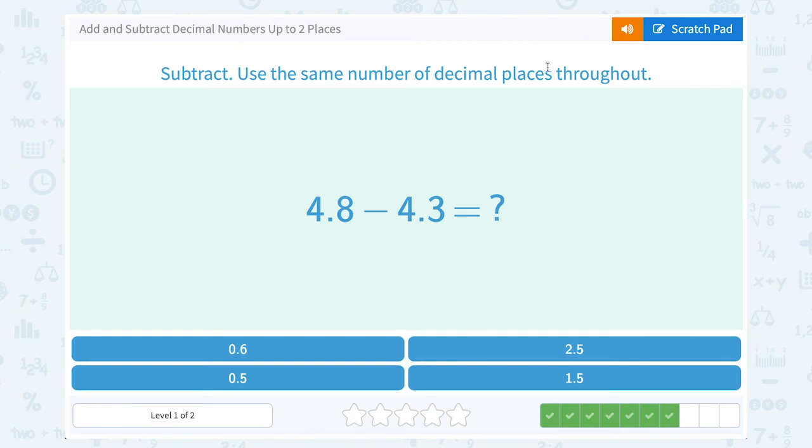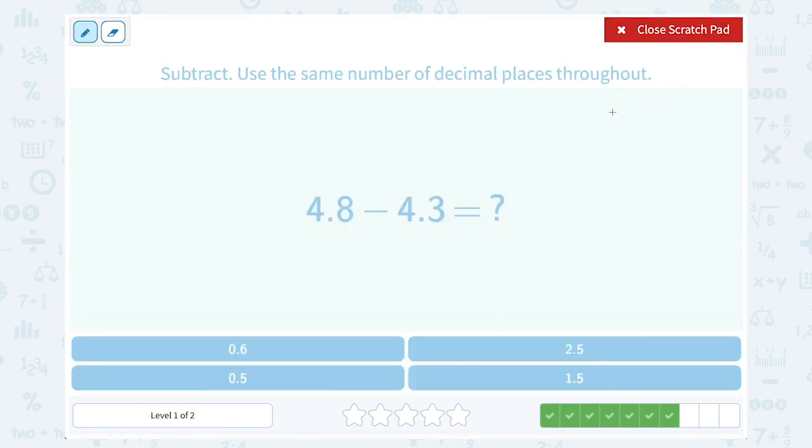4.8 minus 4.3 equals what number? Well, again, line up your place values. 4.8 minus 4.3. Let's line up our decimal point. In the tenths place, 8 minus 3 is 5. In the ones place, 4 minus 4 is 0. So we wind up with 0.5.